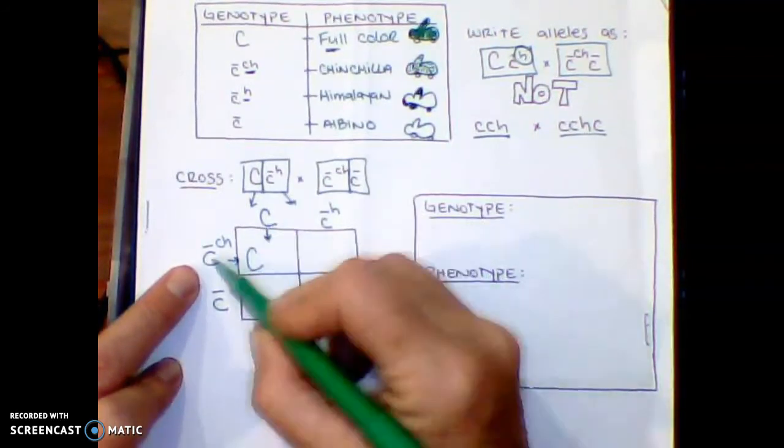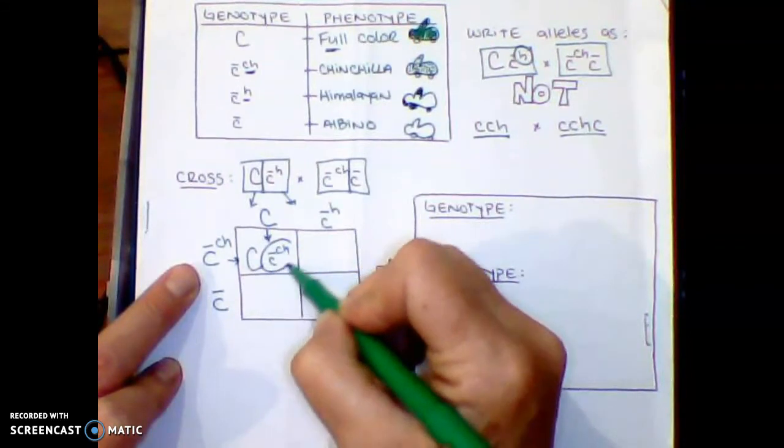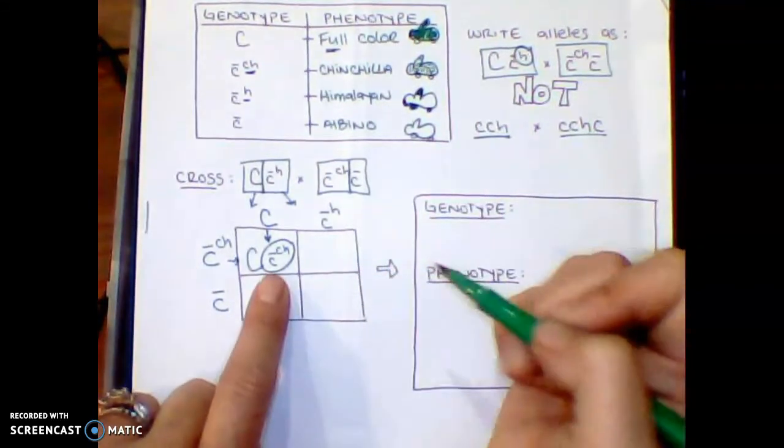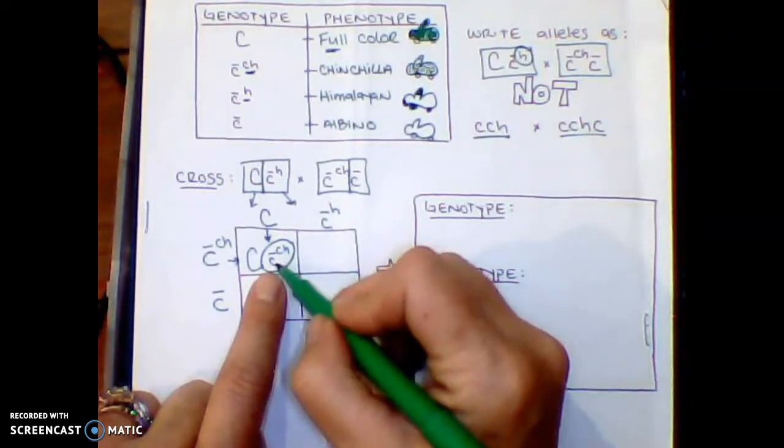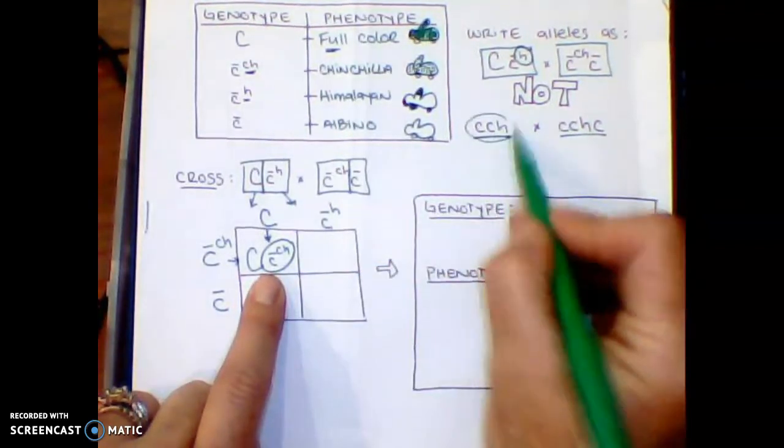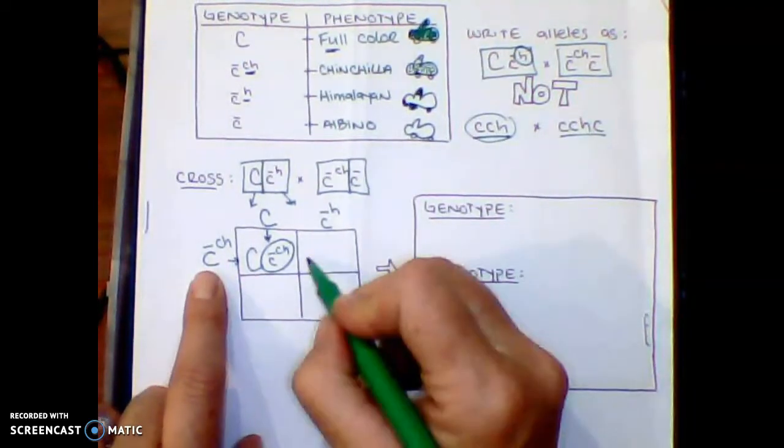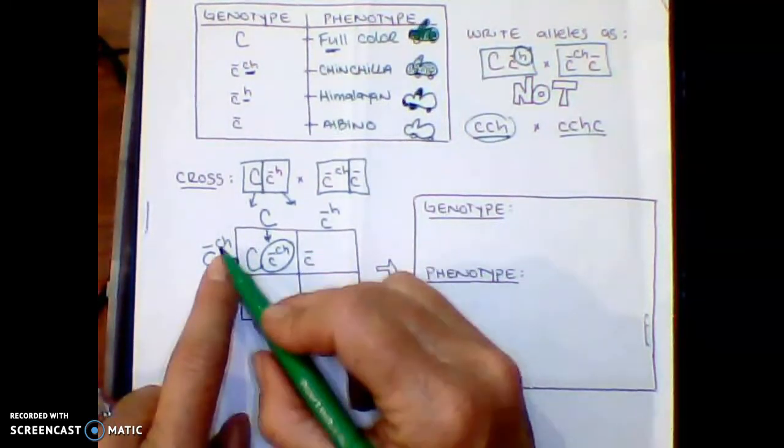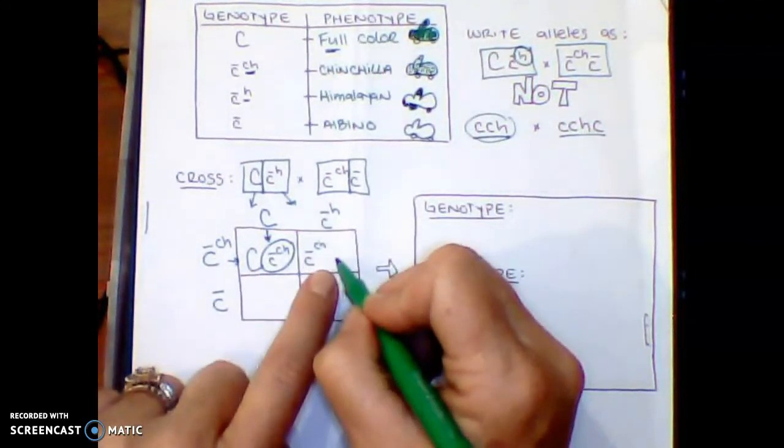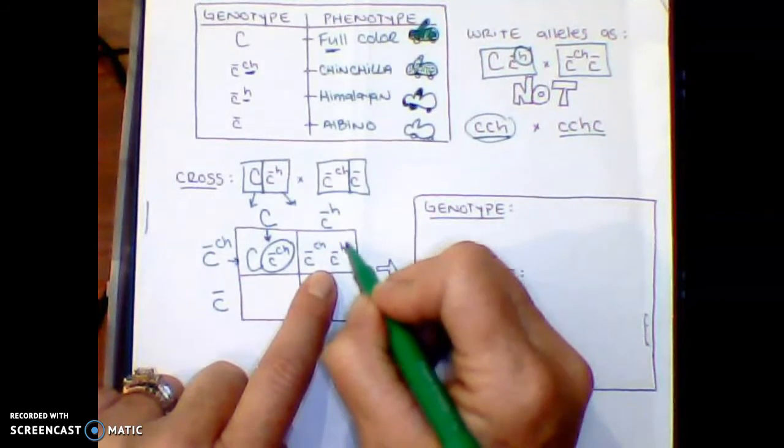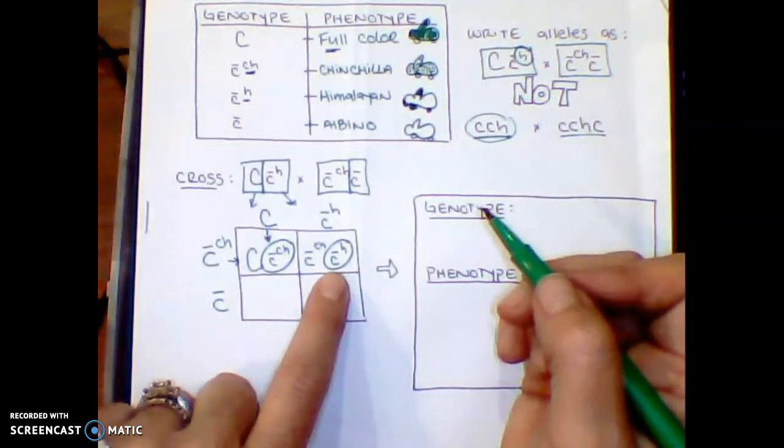So just like your normal monohybrids, we're going to drop it down, bring it over. But when we do this, please remember to always write the big capital letter first. So big capital C first, and then we have a little c CH. And I always like to put a circle inside my Punnett square of that second allele, so I can clearly see that that's c H, not what's going on up over here. So bring in my next one. So these are both little c, so it doesn't matter which order you put it in. So c H, and then drop down this one, little c H.